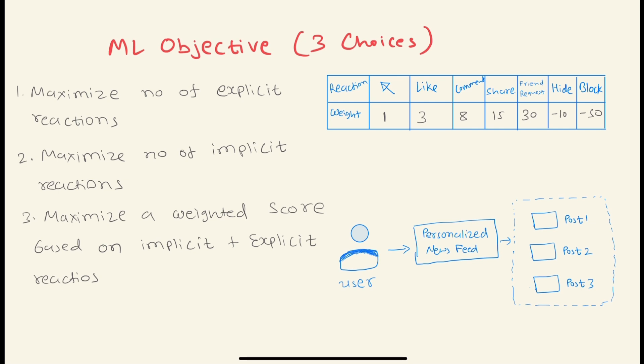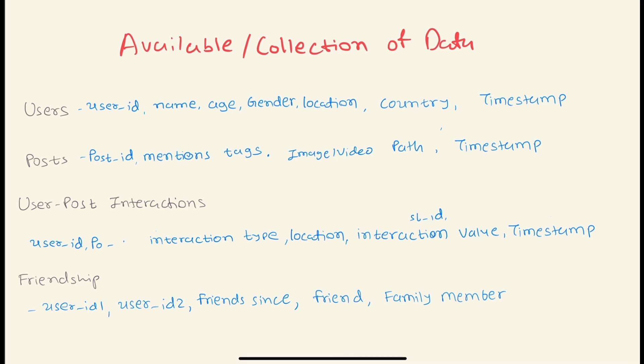Next, we ask what data is available or what kind of data we can collect. At a high level, we should discuss what kind of data we're looking for. First is user-related data, then post data, user-post interactions, and something like friendship data. For users we can track user ID, name, and demographic data. For posts there could be multiple attributes like post ID, mentions, tags, image path, and timestamp when the particular post was created.